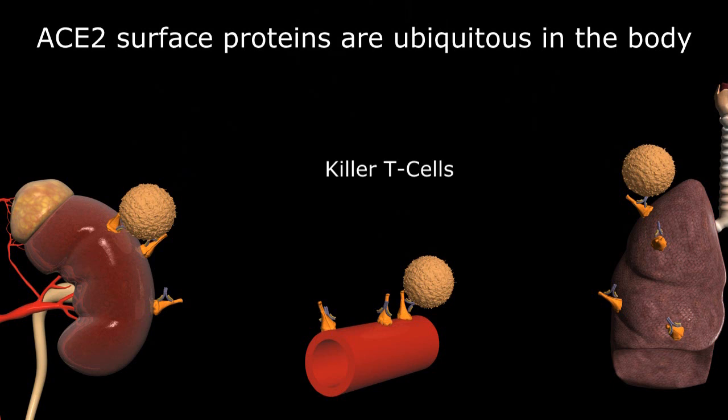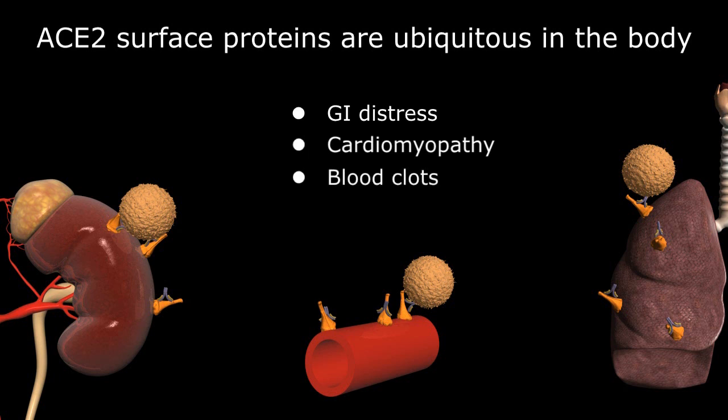This may explain some of the observed side effects post-vaccination, such as GI distress, cardiomyopathy, and blood clots. There are also reports that these spike proteins can cross the blood-brain barrier and interact with the cells of our central nervous system, resulting in symptoms like sustained vertigo or paranoia.